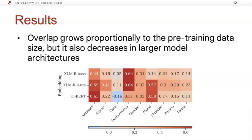Finally, overlap grows proportionally to the pre-training data size, but it also decreases in larger model architectures. We explain this phenomenon with the fact that more data yields higher quality and, as a consequence, more entangled multilingual representations.